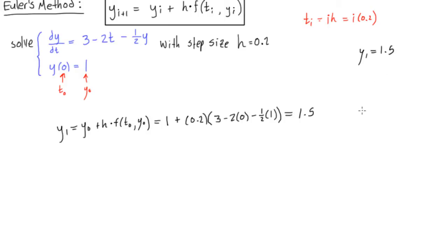All right, so let's solve y2. So y2 is going to be equal to y1 plus h times our function evaluated at t1 and y1. Okay, so we will have y1 is equal to 1.5 plus h, still 0.2, times the function now evaluated at t1 and y1.